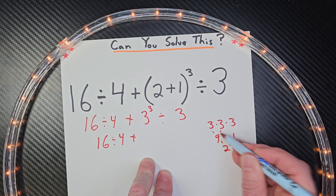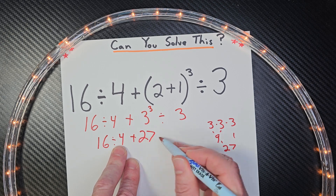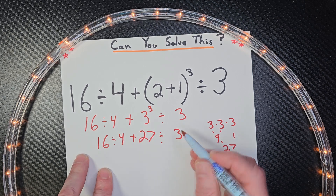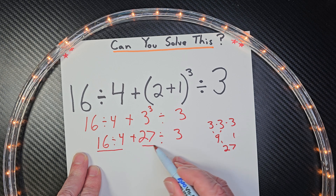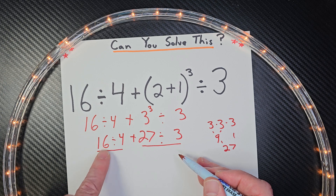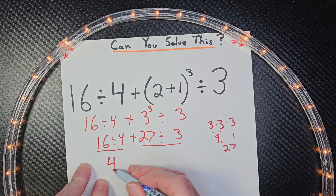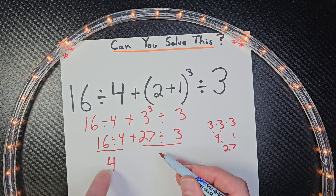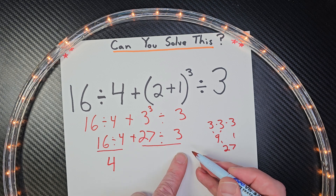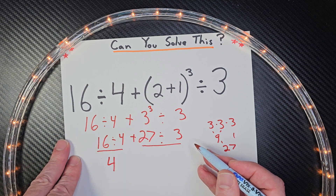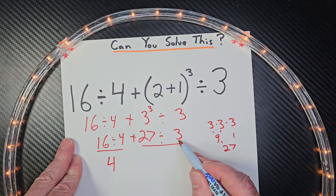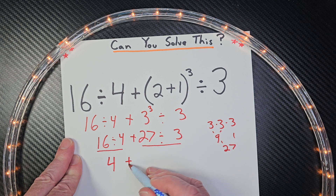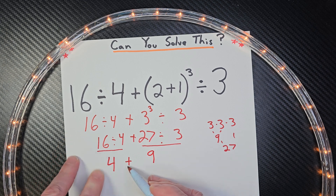So now we have 16 divided by 4, plus 27, divided by 3. The next step: let's do division from left to right. I'm going to underline 16 divided by 4, and then 27 divided by 3. So 16 divided by 4 is 4 — and it's not 4 plus 27, because that would be addition and we need to do multiplication and division first. Then 27 divided by 3 equals 9. So we have 4 plus 9.